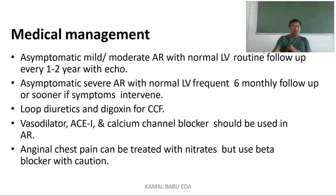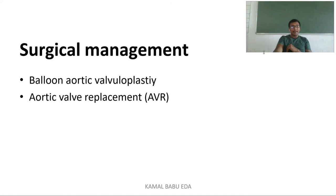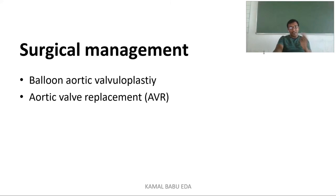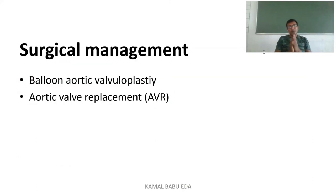Surgical management includes balloon aortic valvuloplasty and aortic valve replacement, similar to aortic stenosis. A guide wire is inserted, a catheter is placed near the aortic valve, the balloon is inflated, and the pathway is widened. This concludes the management of aortic regurgitation.